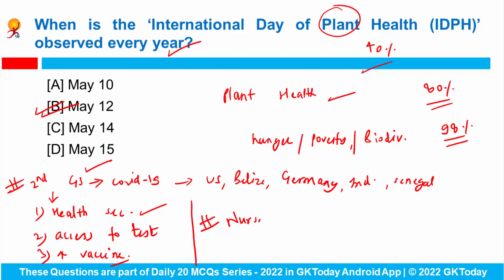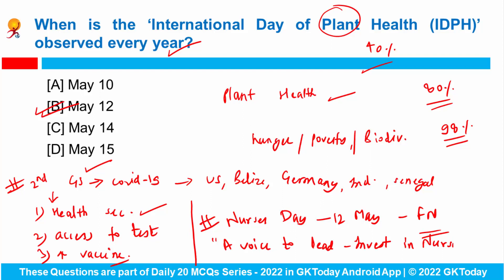International Nurses Day is celebrated on 12th of May to mark the birth anniversary of Florence Nightingale, who is considered as the founder of modern nursing. This year's theme was 'A Voice to Lead: Invest in Nursing and Respect Rights to Secure Global Health.' National Technology Day is observed on 11th of May.